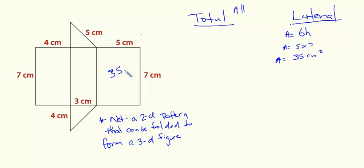My next rectangle is three by seven. So three times seven gives me 21 centimeters squared. So this is 21.